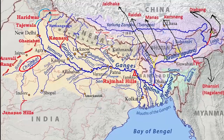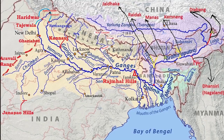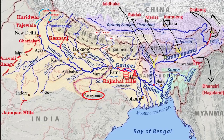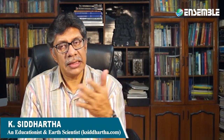The Chambal, Sindh, Betwa, Ken, and Son are rivers which originate from the northern edge of the peninsula and join the Ganga river system in the northern plains. The Son, after originating from the Maikal plateau, meets the Ganga in Bihar, while all others meet the Yamuna on its right bank in the plains.